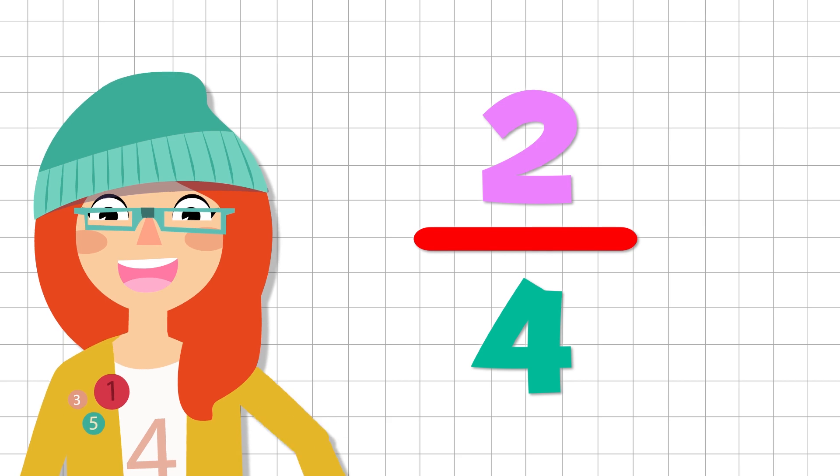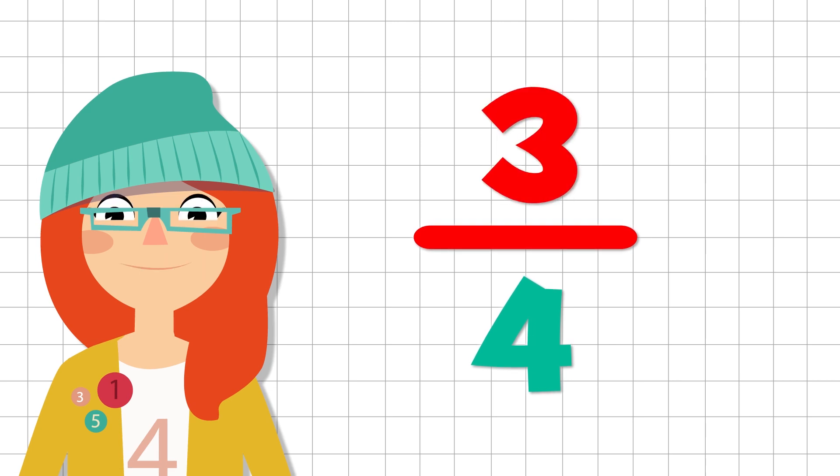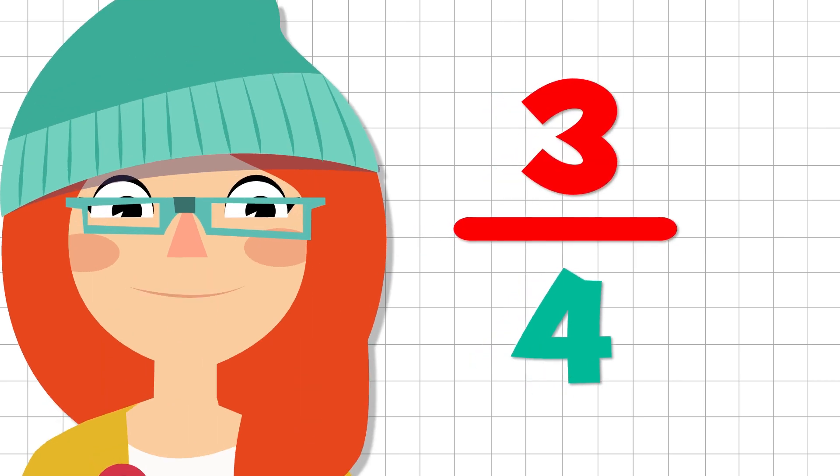When the denominator is a four, we say fourths. This fraction would be two fourths. And this one? Very well. Three fourths. And so on.